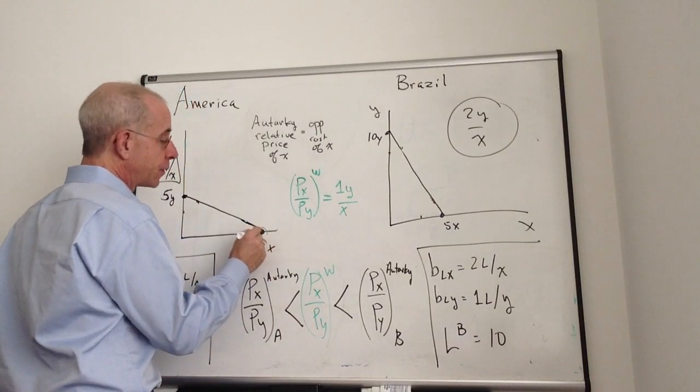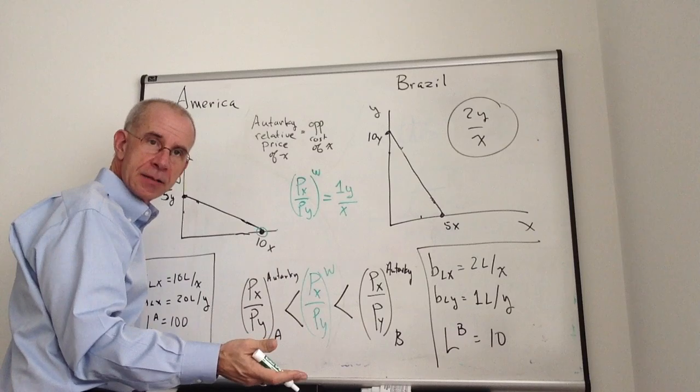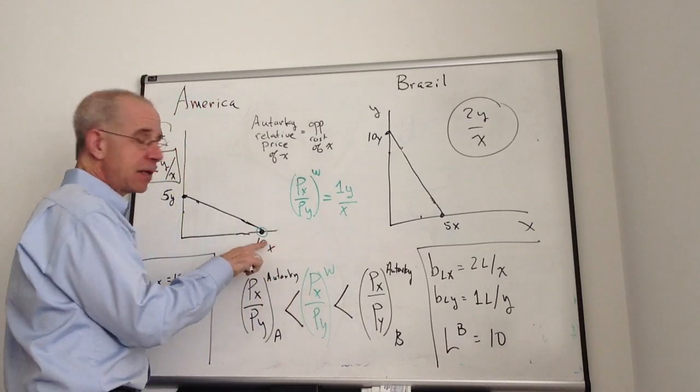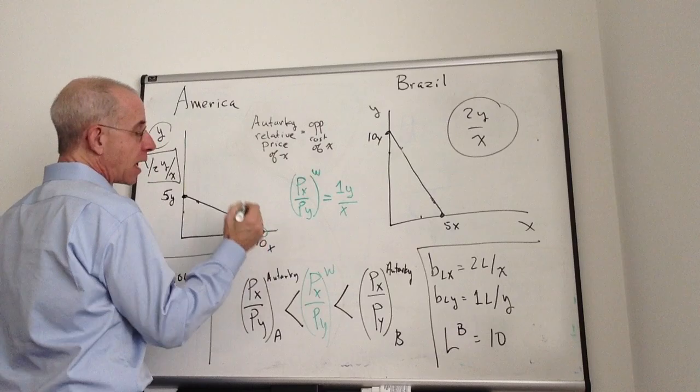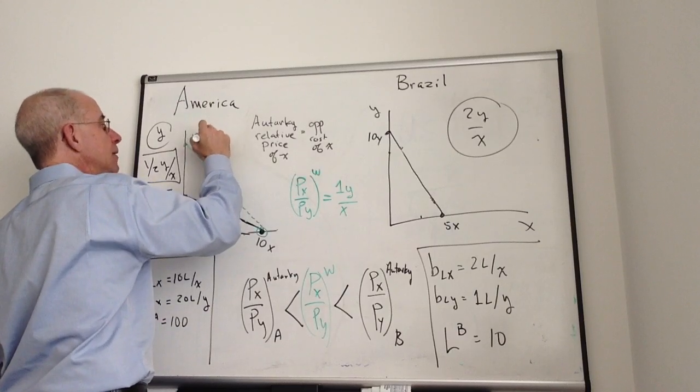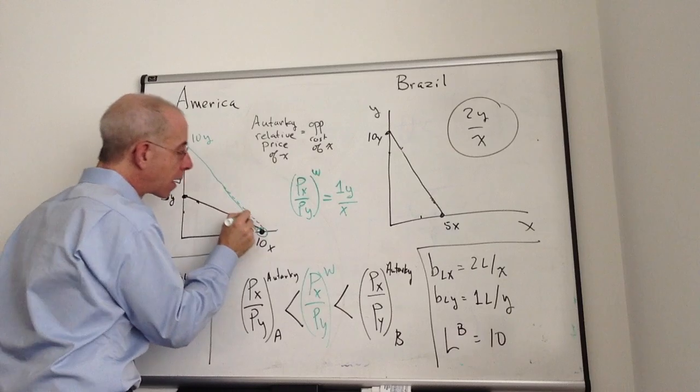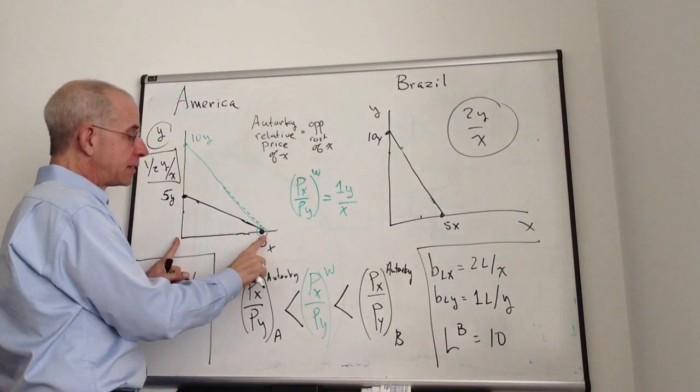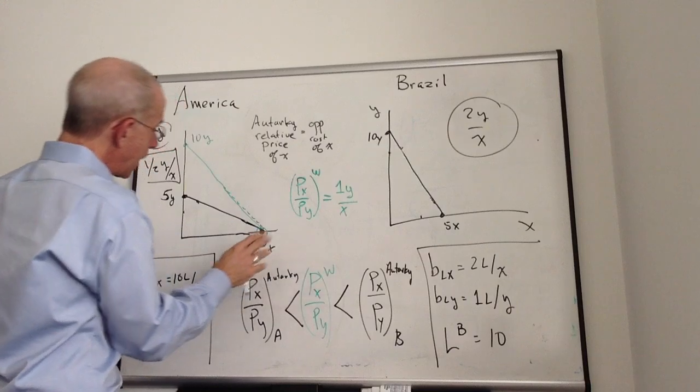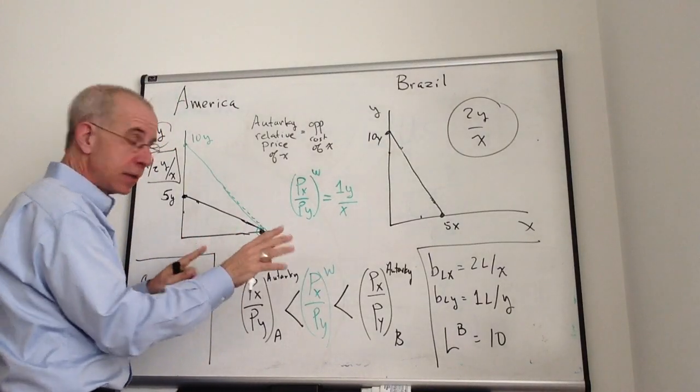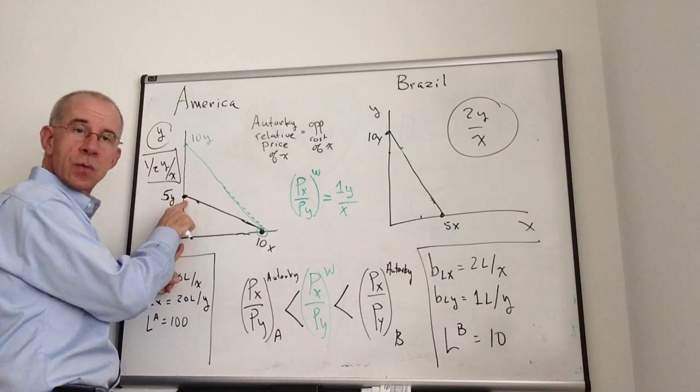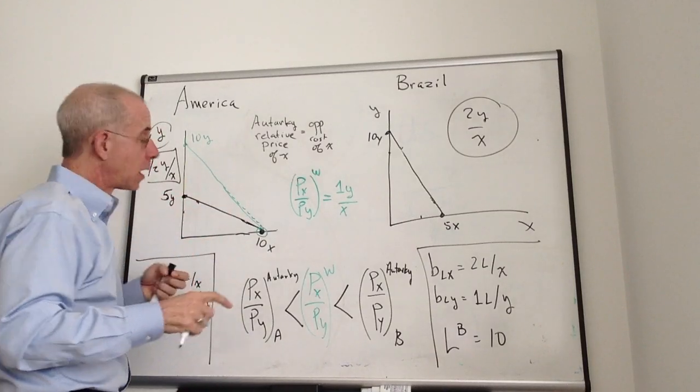In fact, if they completely specialize in X, take all the resources out of the Y industry so it's no longer there, and produce ten units of X, at these prices they would potentially be able to buy as much as ten Y in return. They can transform ten units of X into ten units of Y using these world prices. Internally, in autarky, if you gave up the production of ten units of X, the most Y you could get in return is 5Y.